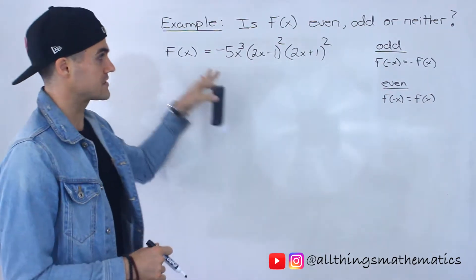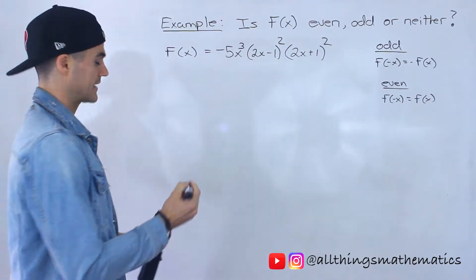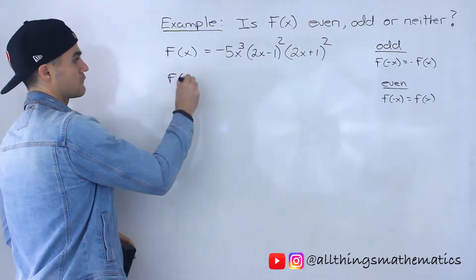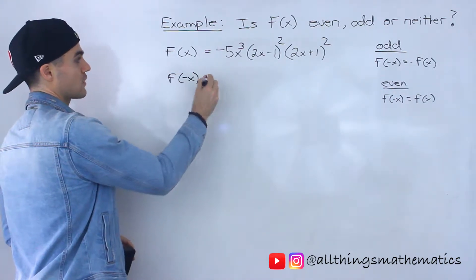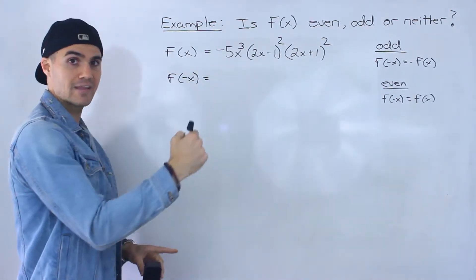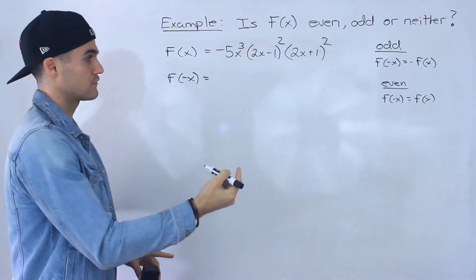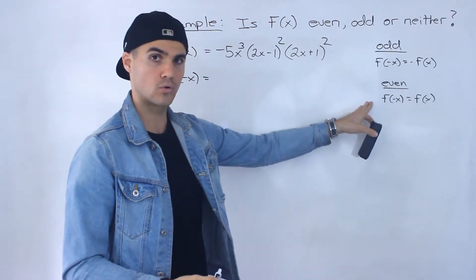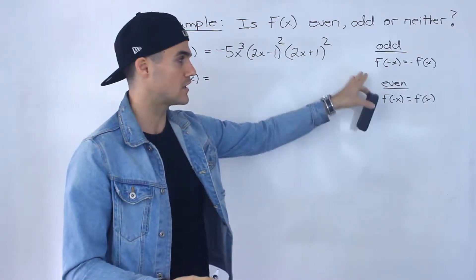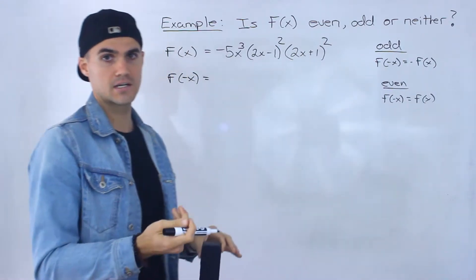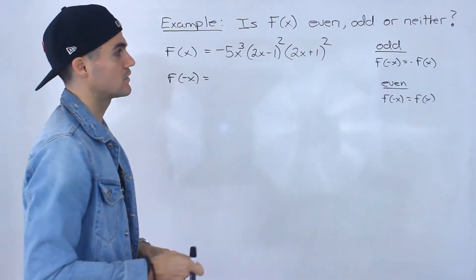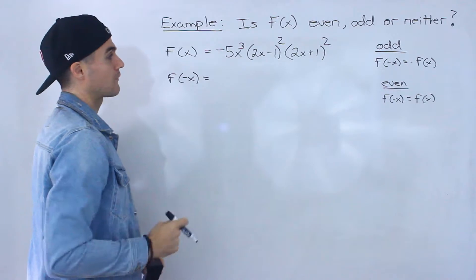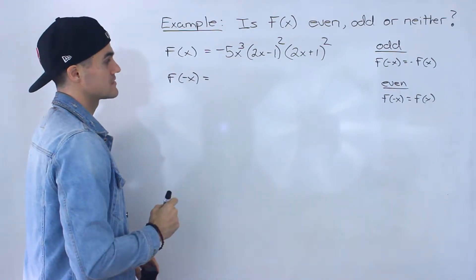So we have f of x here. Like we did in the previous videos, we need to find an expression for f of negative x, and then negative f of x, and see if any of these equalities hold. If none of them hold, it's going to be neither even nor odd, and if one of them does hold, it's going to be that corresponding symmetry.